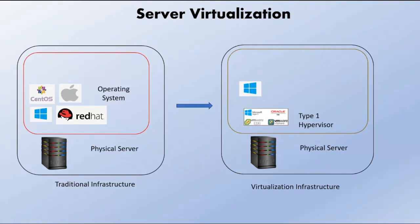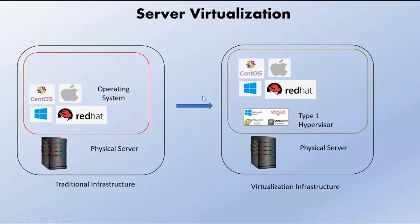We can run all operating systems — Windows, Red Hat, CentOS, or Mac — directly on this hypervisor. All these operating systems will run as virtual machines on this Type 1 hypervisor. So if a company wants to run all the operating systems on the same physical server, it can do so with the help of this Type 1 hypervisor, which acts as a physical server simulator. This means the company can buy only one server, install the Type 1 hypervisor, and then run multiple virtual machines on it. This is called server virtualization.